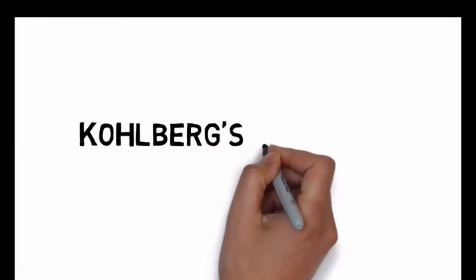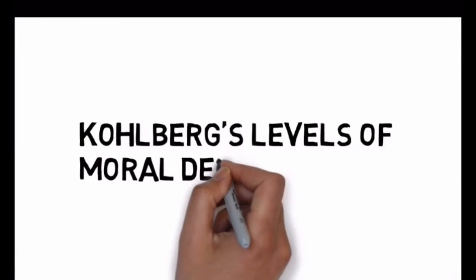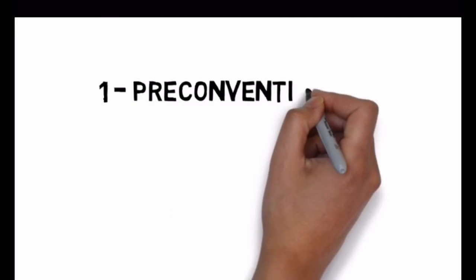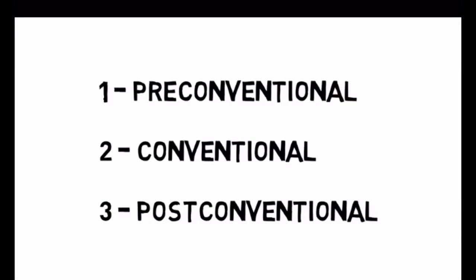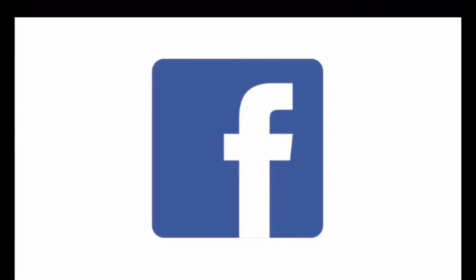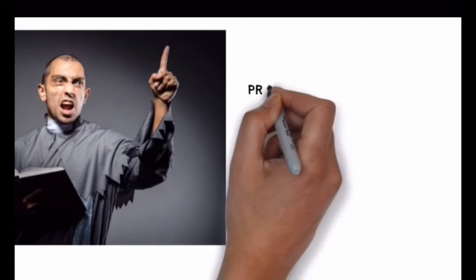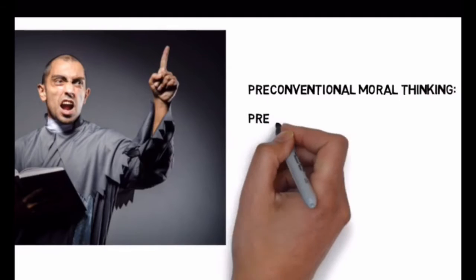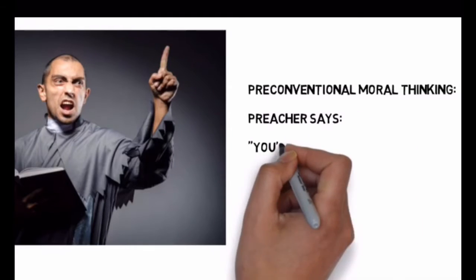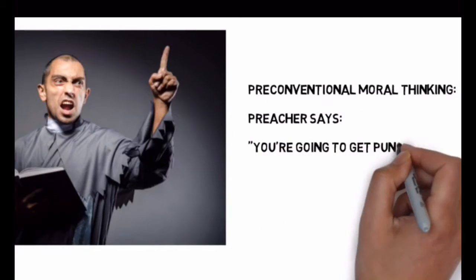There are three key stages and two sub-stages for each of Kohlberg's levels of moral development. We'll focus on the three key stages. Once you have those, the sub-stages will be easy to figure out. We'll use the first few letters of each stage and imagine this: a preacher, a convict, and a Facebook post. In pre-conventional thinking, the child's concern is with possibly getting in trouble and getting punished from authority figures. So, imagine a preacher yelling at his congregation that they're going to be punished from a higher power.